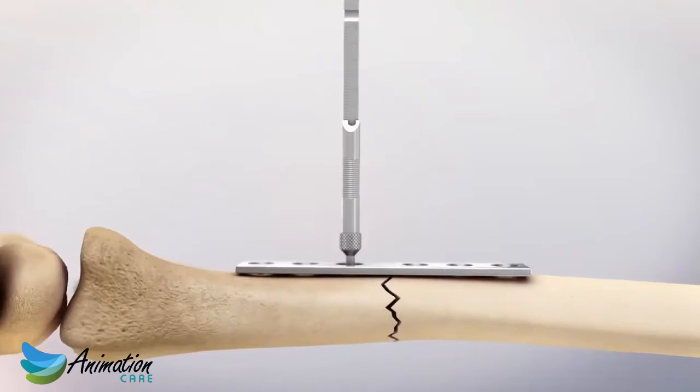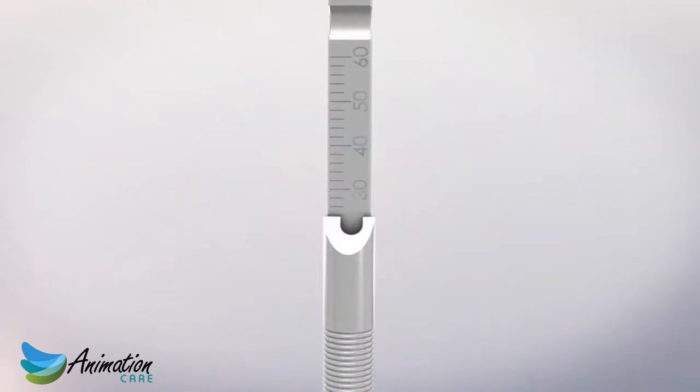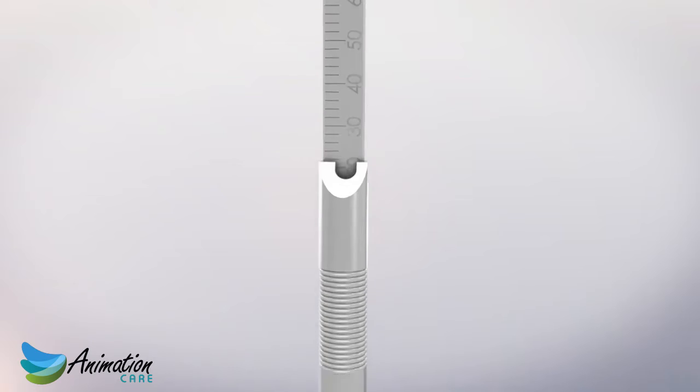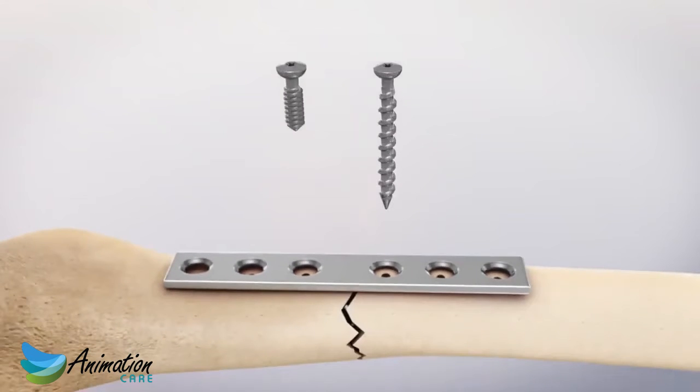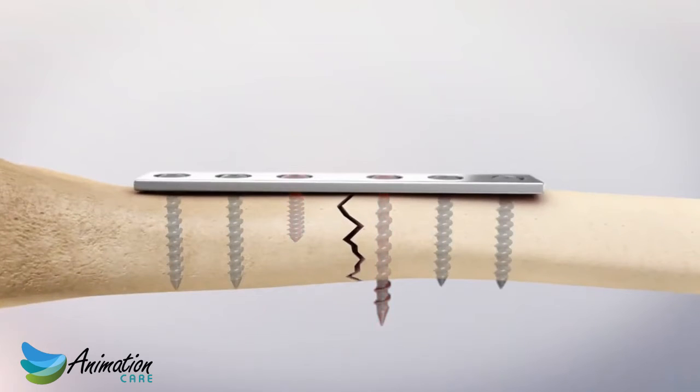Next, a standard depth gauge is used to measure the depth of the pilot hole to determine the appropriate length of screw. Often the standard depth gauge leads to mis-measurement. If a screw is too short or too long, patients can experience complications such as pain, non-unions, and re-operations.